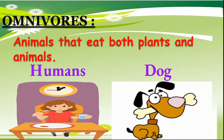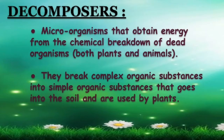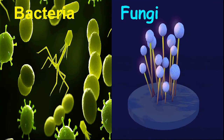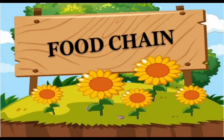The last type is decomposers. Decomposers are microorganisms that obtain energy from the chemical breakdown of dead organisms — both plants and animals. They break complex organic substances into simple organic substances that go into the soil and are used by plants. Bacteria and fungi are examples of decomposers.